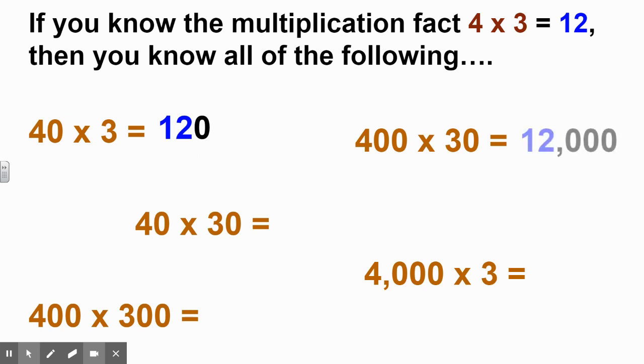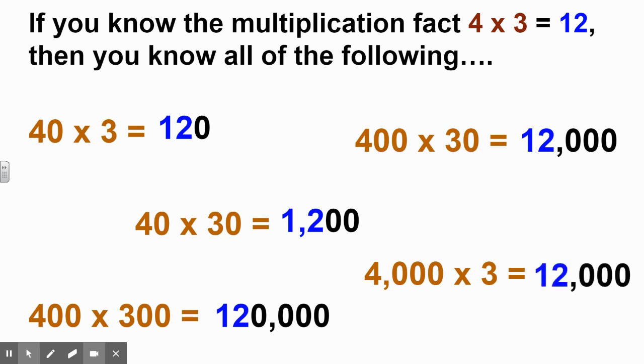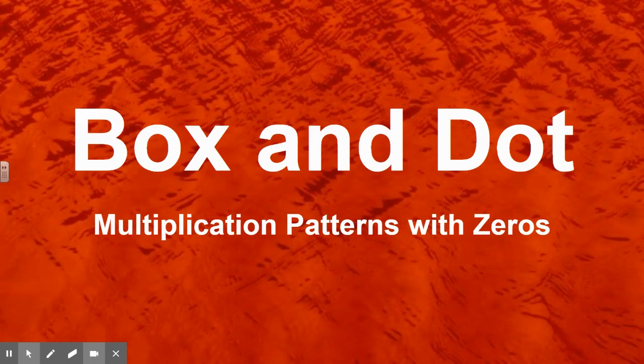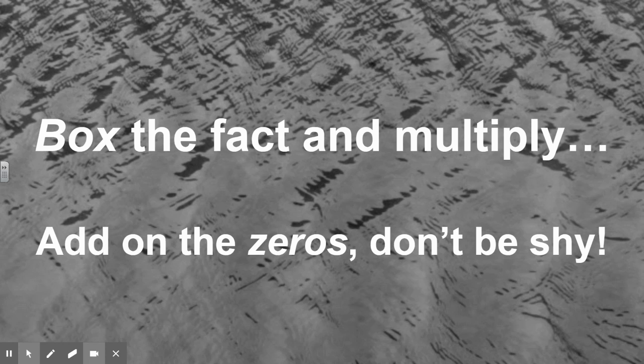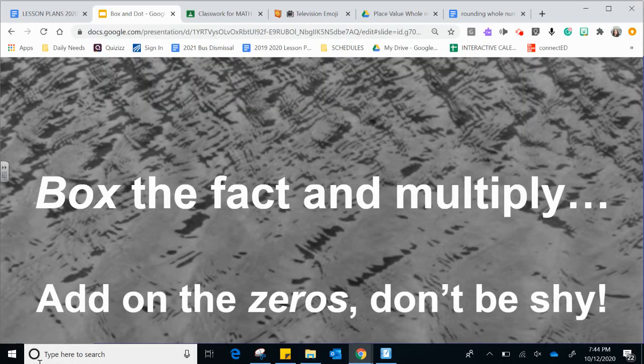That is where our shortcut kicks in. We know the beginning part of the answer is going to be twelve because four times three is twelve, but there will be zeros incorporated in the final answer. This shortcut is called 'box and dot,' and it only works when you're dealing with multiplication with patterns with zeros. The rule is: box the fact and multiply, add on the zeros, don't be shy.